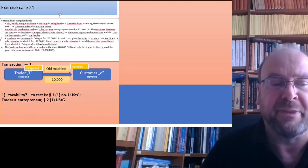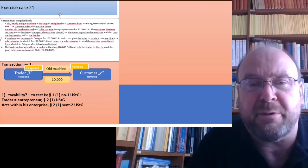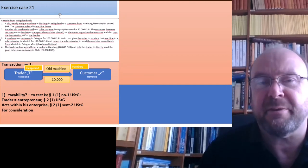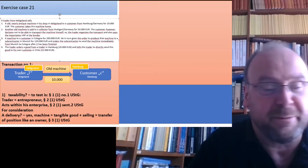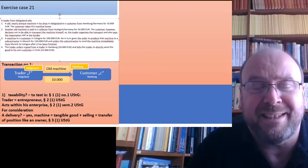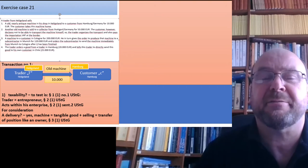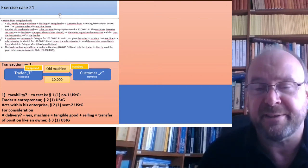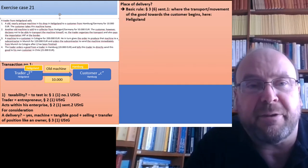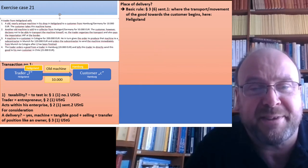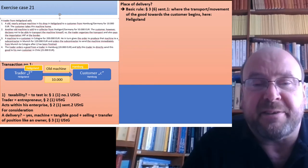Trader T is an entrepreneur, acts evidently within the scope of his enterprise, and demands a consideration. The decisive requirements are: first, this is a delivery, because a machine is a tangible good and selling the machine means you transfer the position like an owner — that is what is required for a delivery under §3(1) UStG. Now we need the place of delivery. The basic rule is: if the good is moved, the place of delivery is where the movement towards the customer begins. That would be Heligoland.